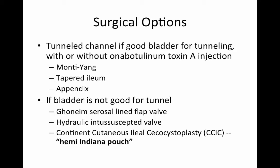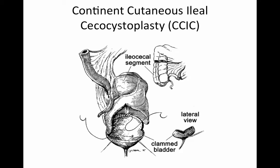A third option, which is much more reproducible and technically straightforward, is creation of a continent cutaneous ileal channel psycocystoplasty — or CCIC — alternatively known as the Hemi-Indiana Pouch. As with the classic Indiana Pouch, an ileocecal segment is harvested, the cecal end is detubularized, and then added to the bladder. The length used from the right colon can vary depending on the amount of augment desired. In some cases you only need the continence mechanism and so a minimal amount of cecum is harvested; in other cases a larger augment might be needed and you could harvest 15 to 20 centimeters of the right colon.